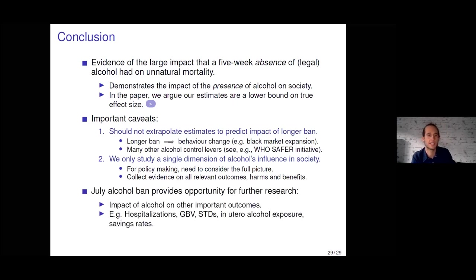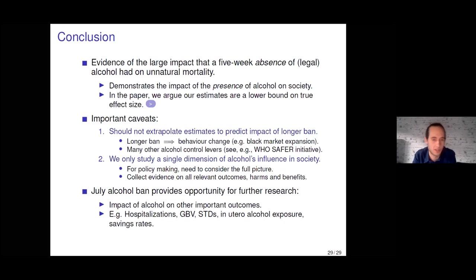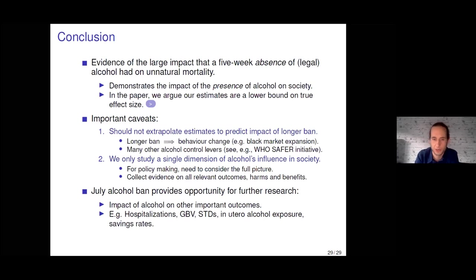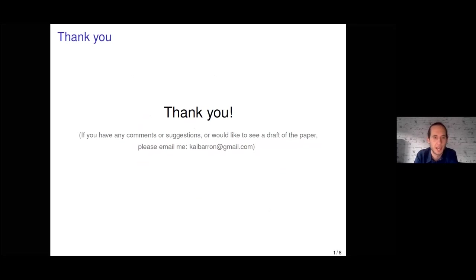The July alcohol ban serves as a very good natural experiment for studying the impact of alcohol on many different outcomes — for example, hospitalizations, gender-based violence, sexually transmitted diseases, in utero alcohol exposure and its later life outcomes, and savings rates. I leave all of this to future work, and I'd like to thank you very much for your attention. This is the first time presenting this, so if you have any comments, suggestions, or would like to see a draft of the paper, please email me.